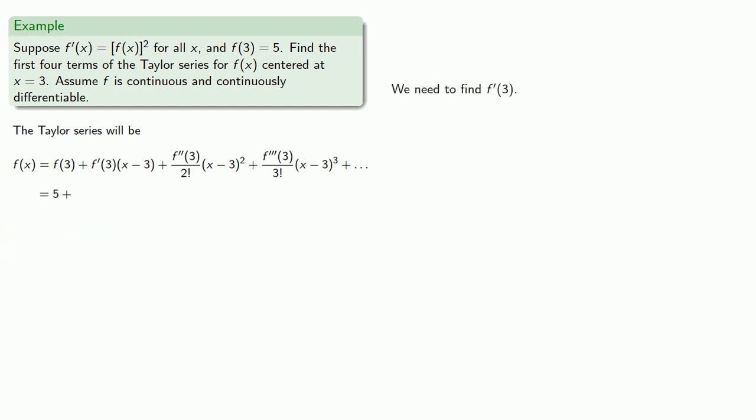Now we need to find f'(3). If only there was some way we knew what f'(x) was. Oh wait, we know that f'(x) = [f(x)]² for all x. So we have f'(x).